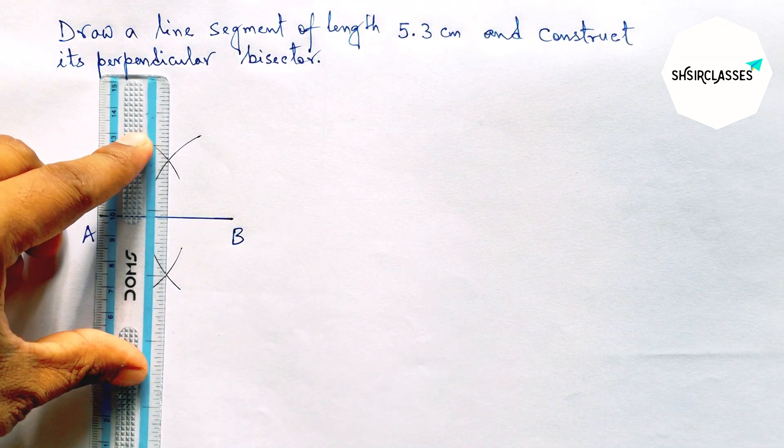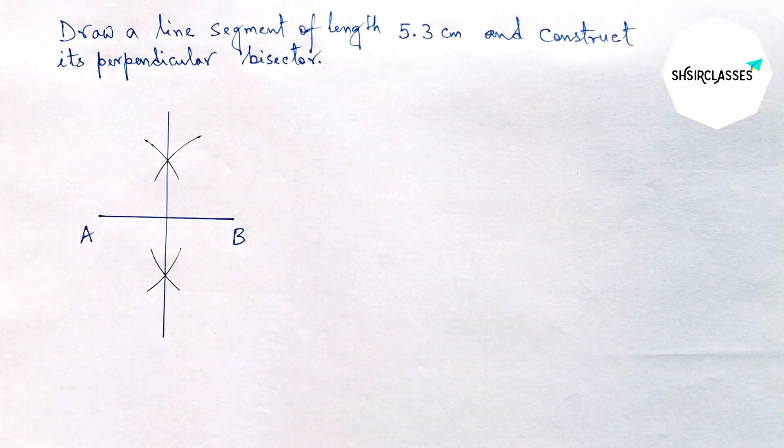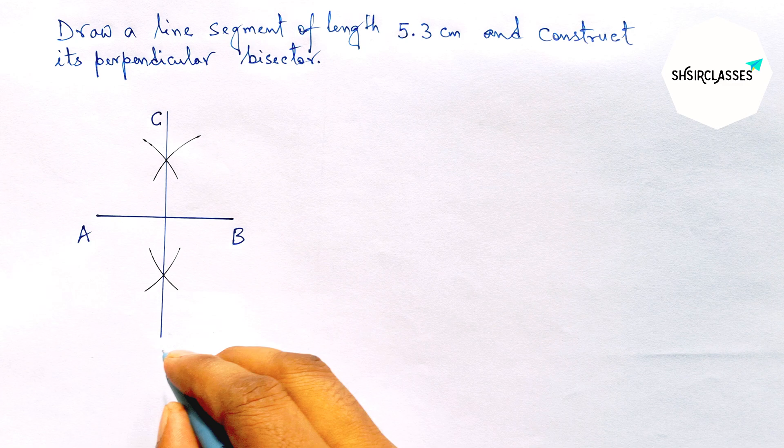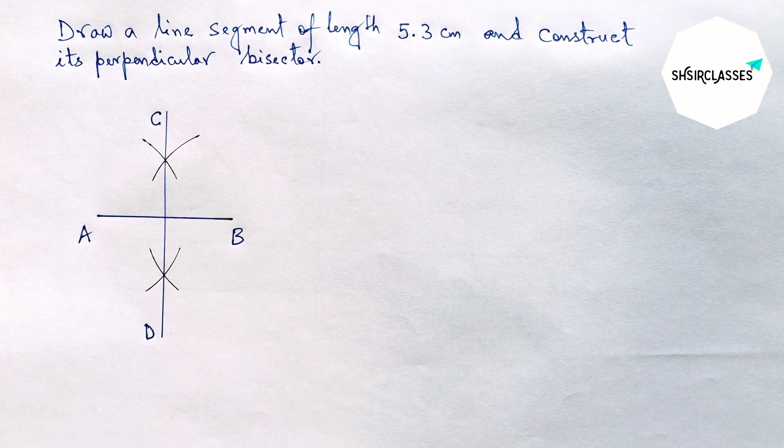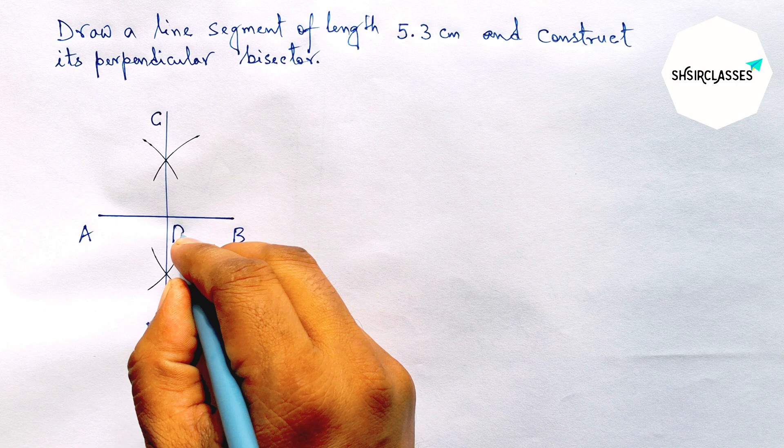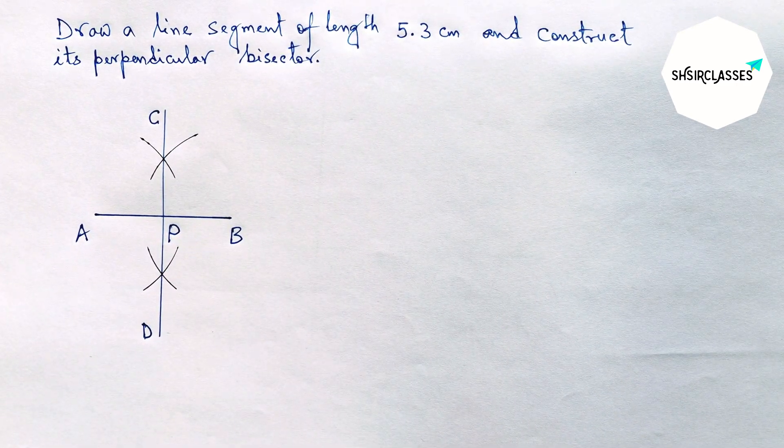Next, join these points and this is the required perpendicular bisector. Now labeling here C and here D. A, B and C, D meet at a point, so labeling here P.